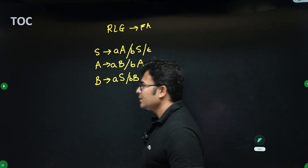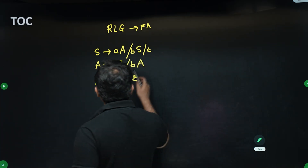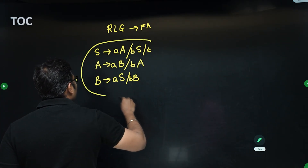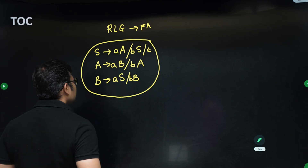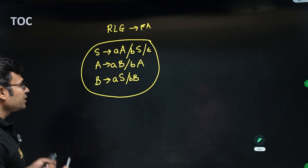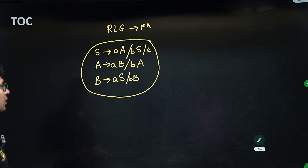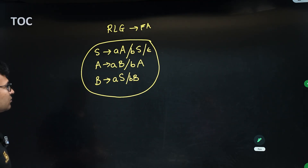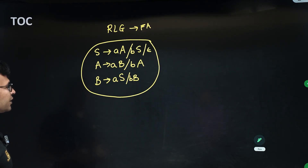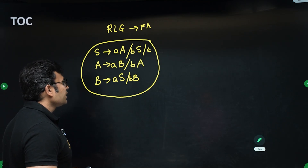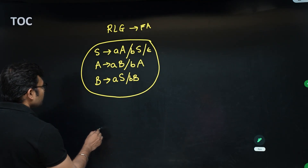In the exam, if they have given you this grammar and ask what language it represents, by looking at the grammar it is very difficult to answer. But if you observe, it is a right linear grammar, and a right linear grammar can be converted to a finite automata easily.